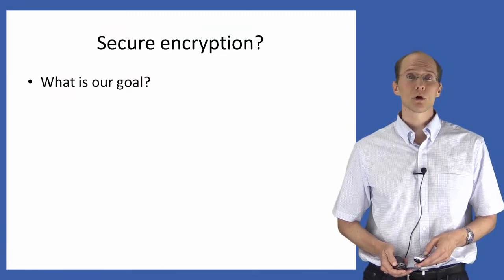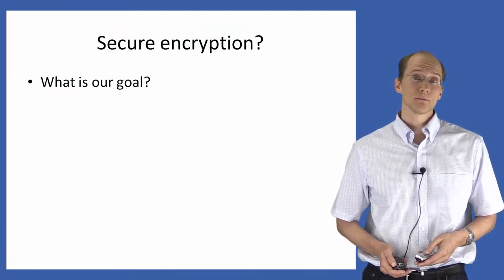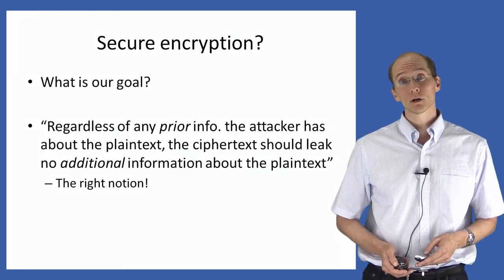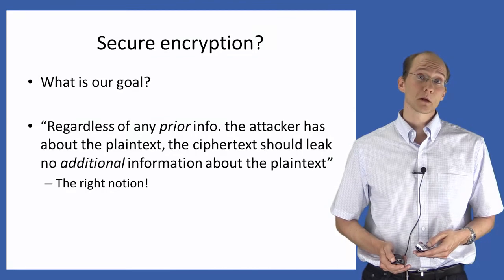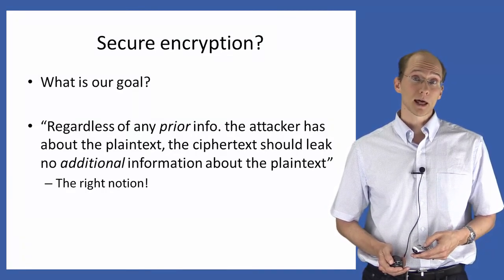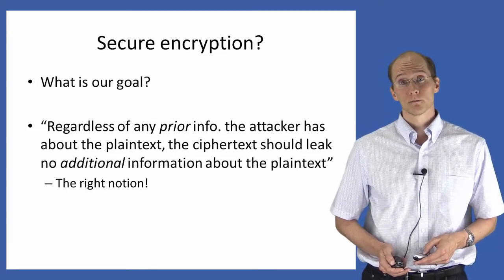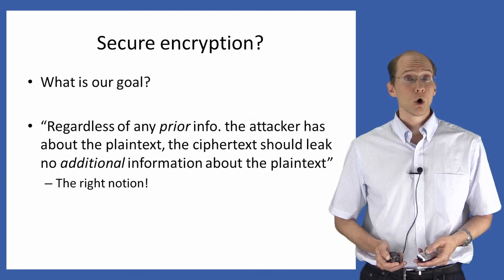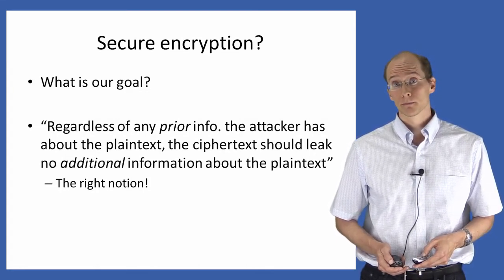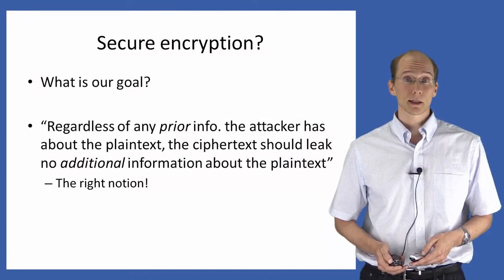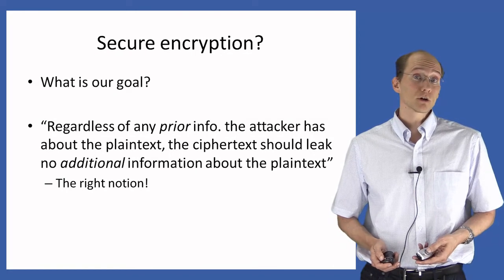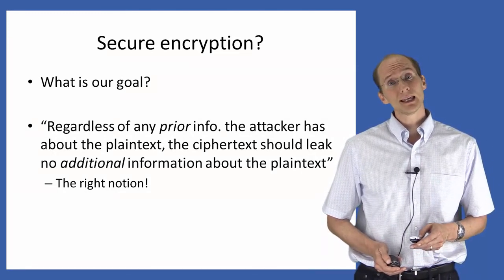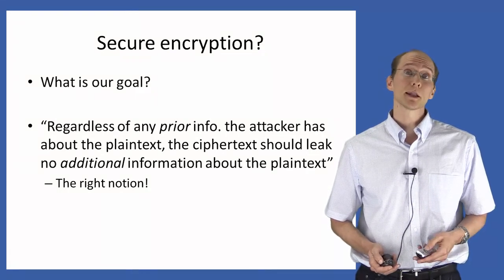Cryptographers have thought about the problem of defining secure encryption for many years. The definition they have converged upon, which takes into account all the previous considerations, is this one: an encryption scheme is secure if, regardless of any prior information the attacker has about the plaintext, the ciphertext observed by the attacker should leak no additional information about the plaintext. This rules out learning 90% of the plaintext, individual characters, or any other type of information. On the other hand, blindly guessing some character of the plaintext is not considered a violation of security, because the attacker could have guessed without seeing the ciphertext at all — as long as seeing the ciphertext does not make it any easier to guess, that's not a violation of security.